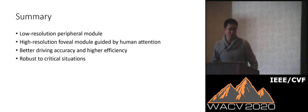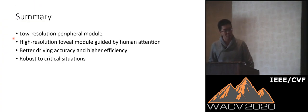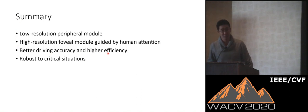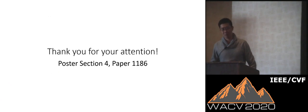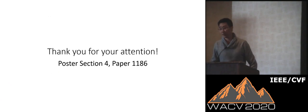To summarize, our model has a low-resolution peripheral module and a high-resolution foveal module. It achieves better driving accuracy and higher efficiency, and it is robust to critical situations. The code is already available on GitHub. Thank you for your attention.